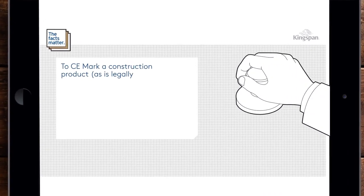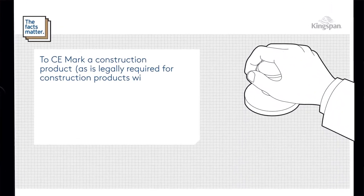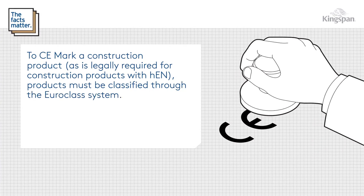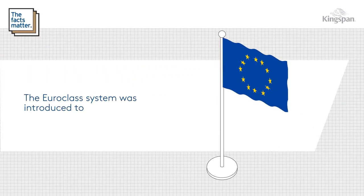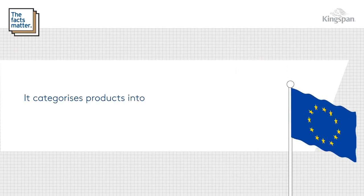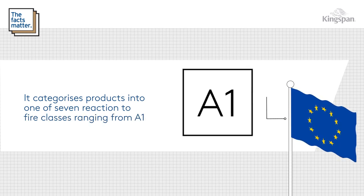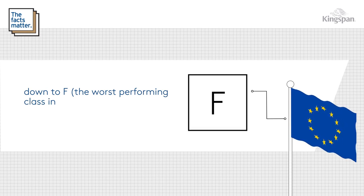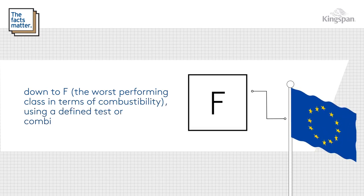To CE mark a construction product, as is legally required for construction products with HEN, products must be classified through the Euroclass system. The Euroclass system was introduced to harmonise standards across the EU. It categorises products into one of seven reaction to fire classes, ranging from A1, non-combustible, down to F, the worst performing class in terms of combustibility, using a defined test or combination of tests.